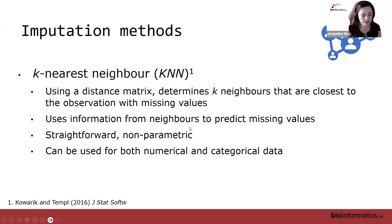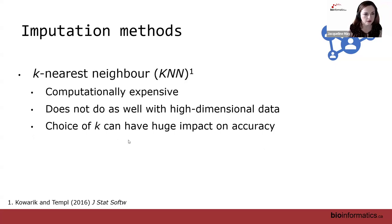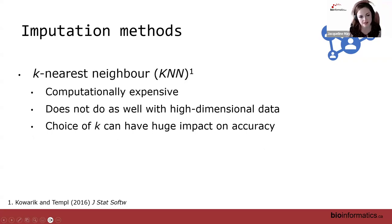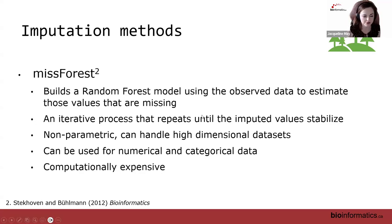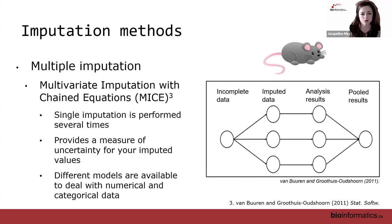KNN can be used for both numerical and categorical data. Unfortunately it's computationally expensive and does not do well with very high dimensional datasets. The choice of k can have a huge impact on accuracy, so you often have to test different values, which can take quite a long time. missForest is an R package that essentially builds a random forest model using the observed data to estimate missing values. It's an iterative process that repeats until imputed values stabilize, is also non-parametric, can handle high dimensional datasets, and works for both numerical and categorical data — though it's also very computationally expensive.